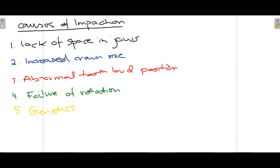There are many causes or factors associated with impaction of third molars. Some common ones include: lack of space in the jaws, increased crown size, abnormal bud position, failure of rotation, and genetics. Let's talk about each one.